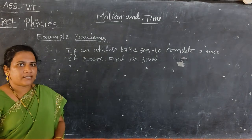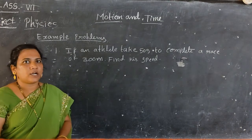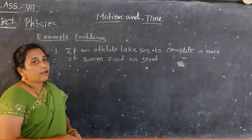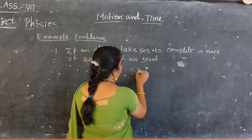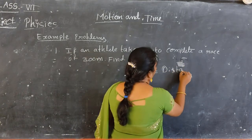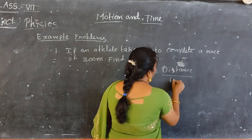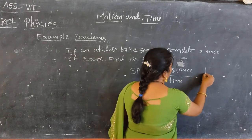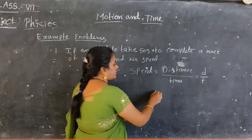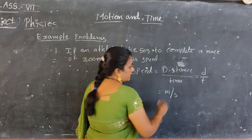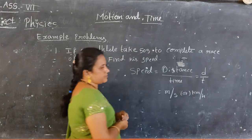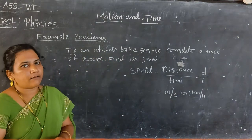What is meant by speed? Speed is the distance travelled by an object with respect to time, which is called speed. What is the formula for speed? Speed is equal to distance by time, which we can denote as D by T. The units of speed are meters per second or kilometers per hour.